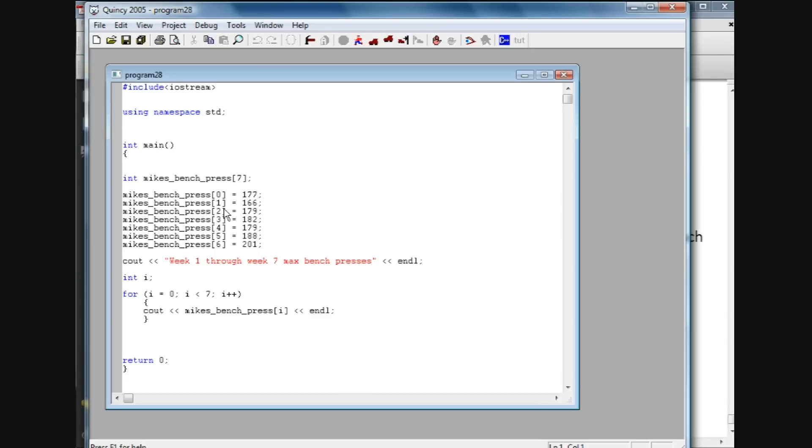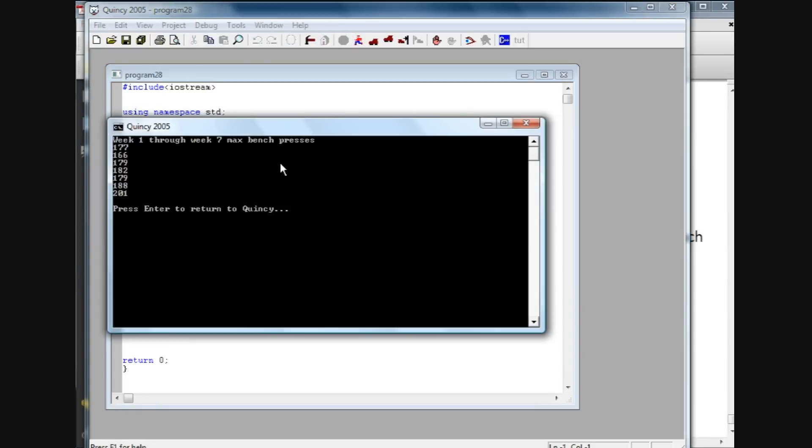We've declared the values for each element, our header here: 'Week 1 through Week 7 Max Bench Presses,' created the integer i, and running the for loop. So I'm going to run this.